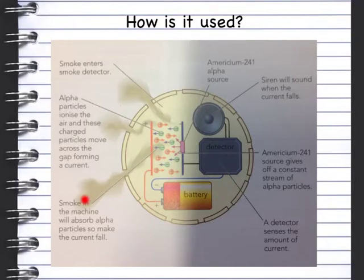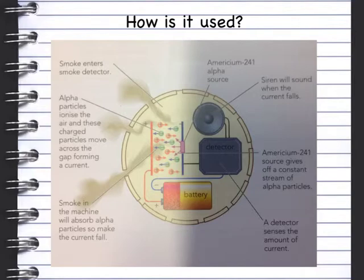As soon as we get any smoke coming in, the alpha will ionise the smoke rather than the air, and that will mean that the circuit is broken and an alarm will sound.